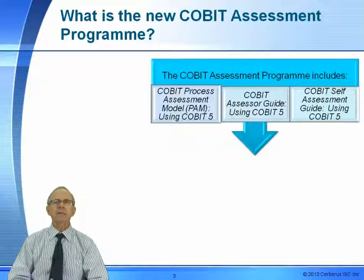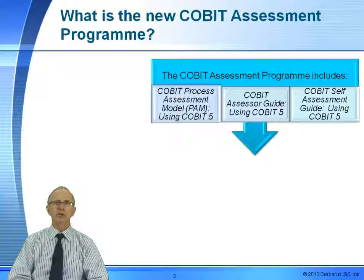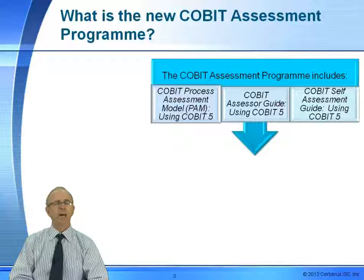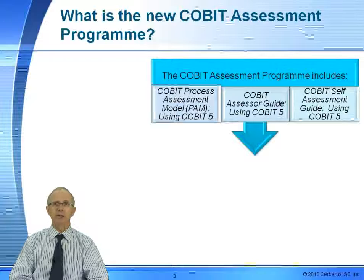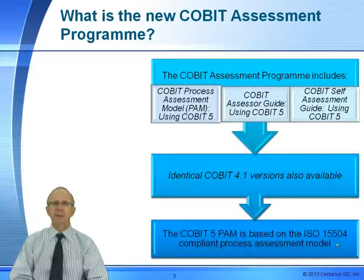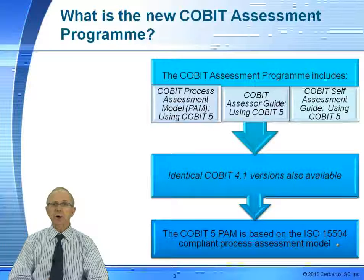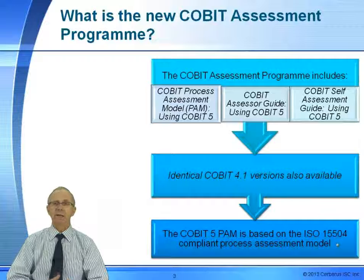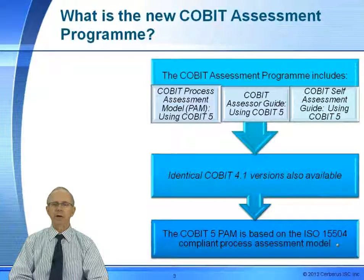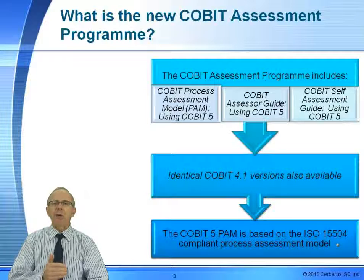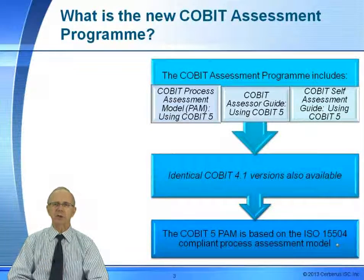And finally, the third is a Self-Assessment Guide. You can use this individually — it's a stripped-down version of the COBIT Assessor Guide. Like the other two documents, there are two versions: COBIT-5 and COBIT-4.1. The COBIT-5 PAM — the Process Assessment Model — has its structure of capability assessment based on ISO 15504, which defines how to do process assessments from an ISO perspective.